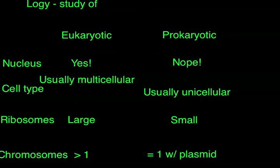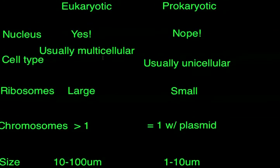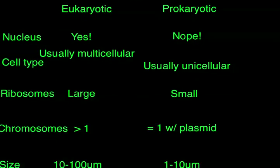The first thing you'll notice is that a eukaryotic organism has a nucleus, while a prokaryotic organism will not. A eukaryotic is usually multicellular, where a prokaryotic will be unicellular — however, there is an entire form of eukaryotic organisms that is unicellular. Ribosomes, which work with protein synthesis, are going to be large in a eukaryotic organism and small in a prokaryotic one. When it deals with chromosomes, a eukaryotic organism will have more than one, while prokaryotics will only have one — it's not even a true chromosome — but they'll also have genetic information in the form of a plasmid.